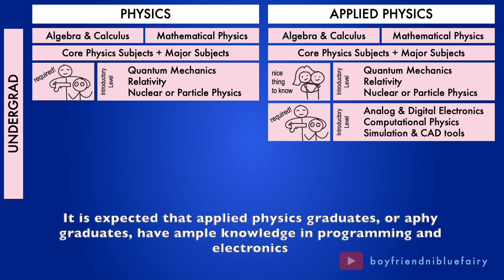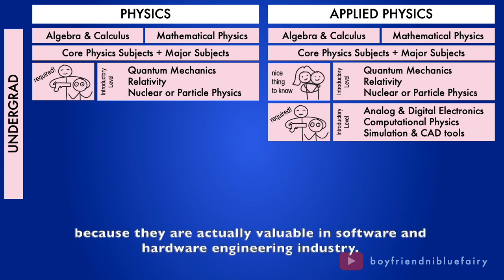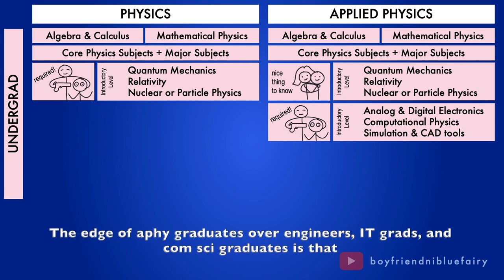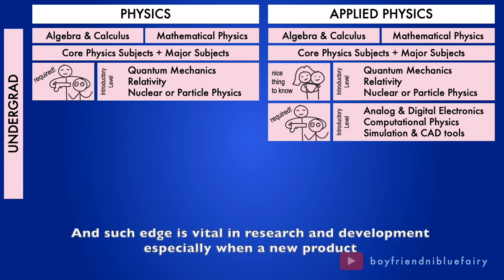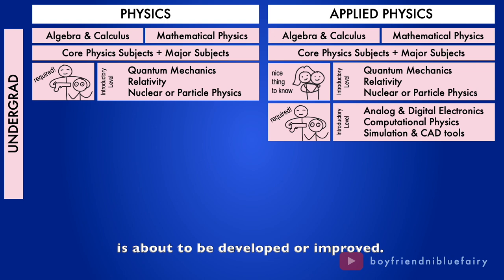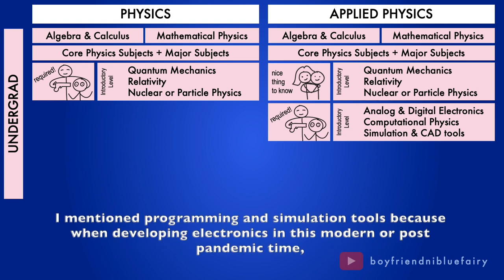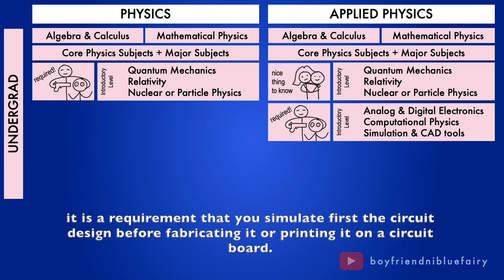It is expected that applied physics graduates or AFI graduates have ample knowledge in programming and electronics because they are actually valuable in software and hardware engineering industry. The edge of AFI graduates over engineers, IT grads, and commsci graduates is that they have deeper understanding of physics. And such edge is vital in research and development especially when a new product is about to be developed or improved. I mentioned programming and simulation tools because when developing electronics in this modern or post-pandemic time, it is a requirement that you simulate first the circuit design before fabricating it or printing it on a circuit board.